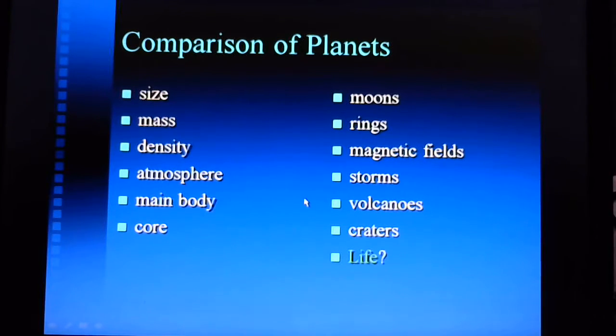For volcanoes, you're going to have to have a solid surface. Here's where we're not going to be seeing any volcanoes on the surface of the gas giant planets. However, we have discovered volcanoes and geysers on moons around the giant planets. And of course, Earth has volcanoes, but Venus has volcanoes as well. And Mars has the biggest volcano in the solar system.